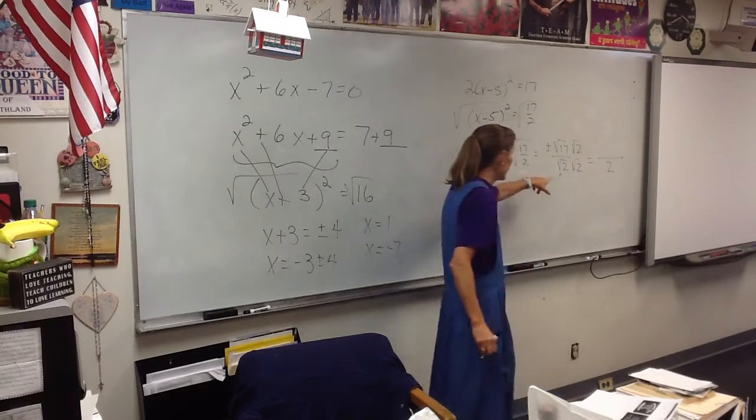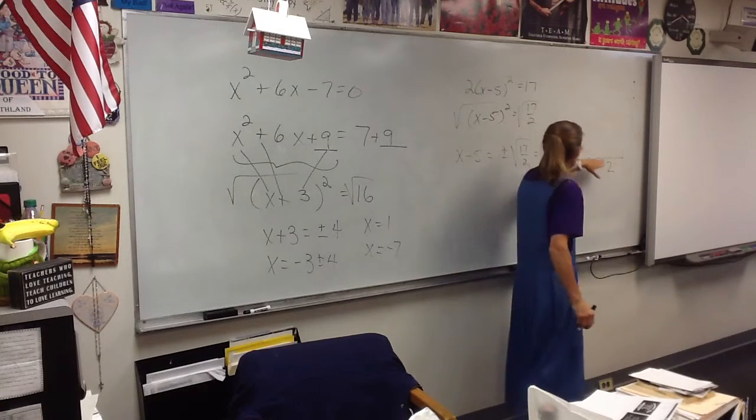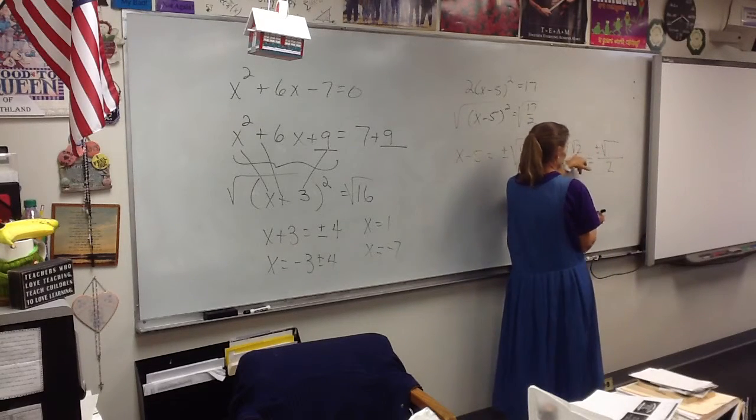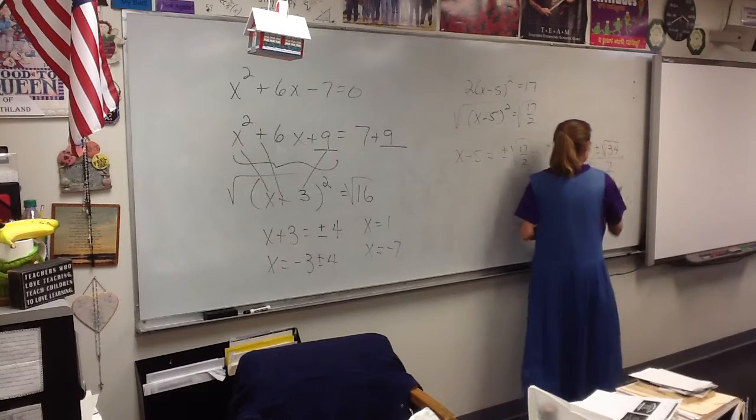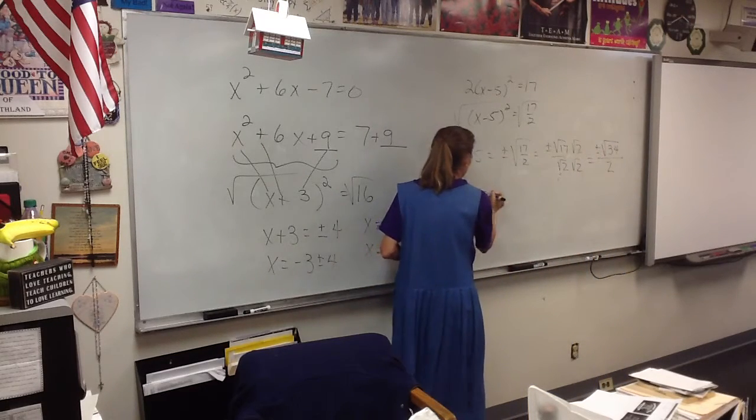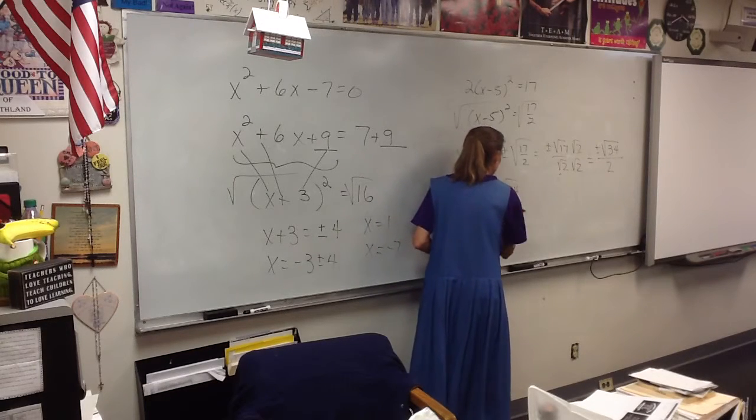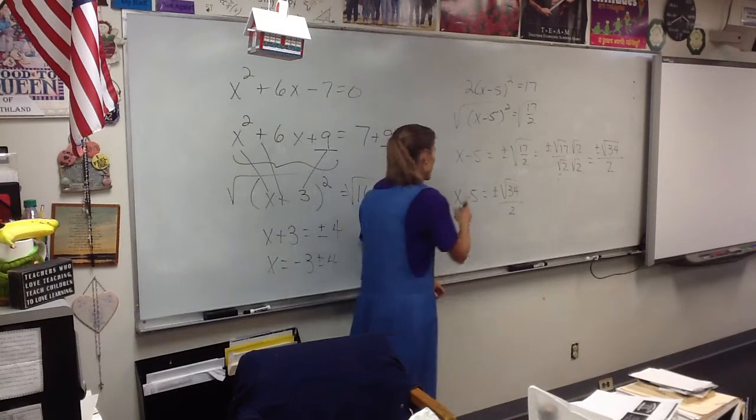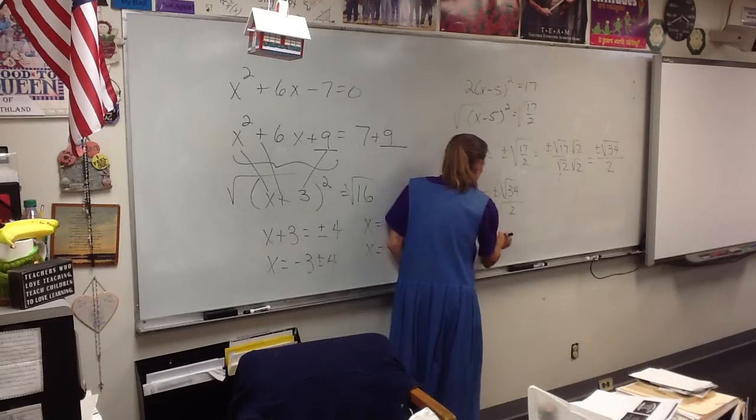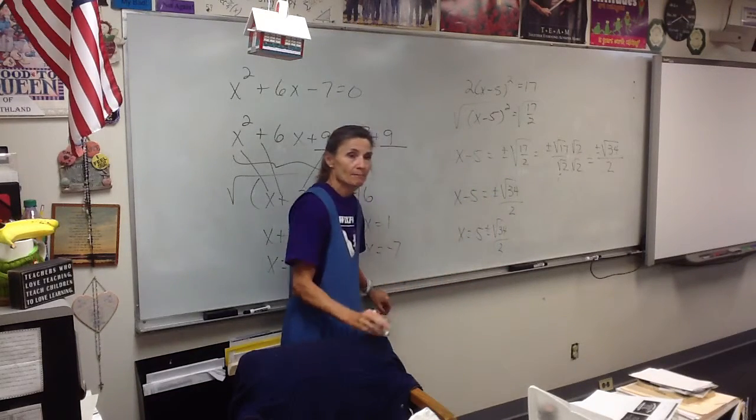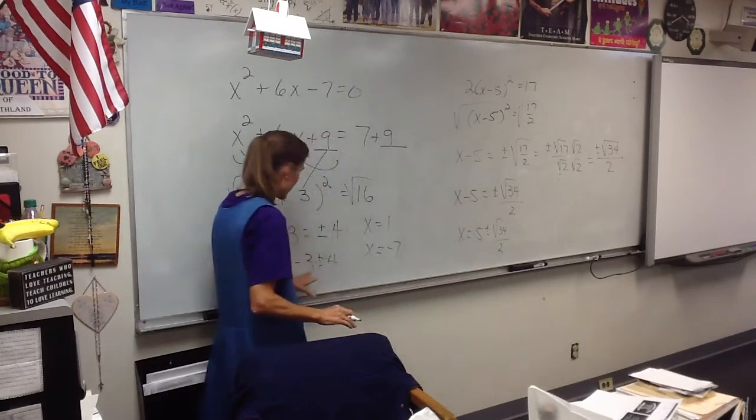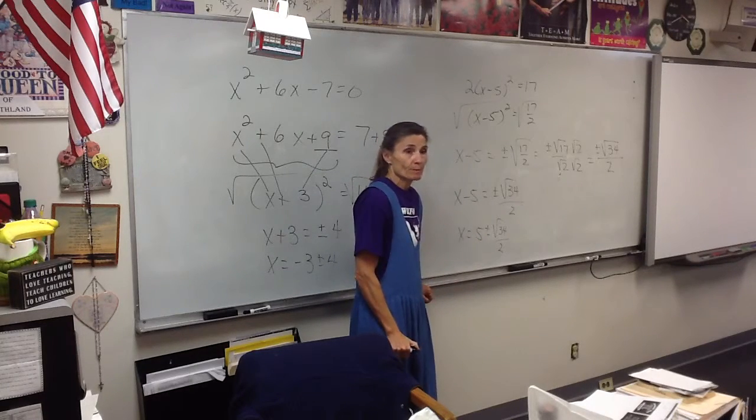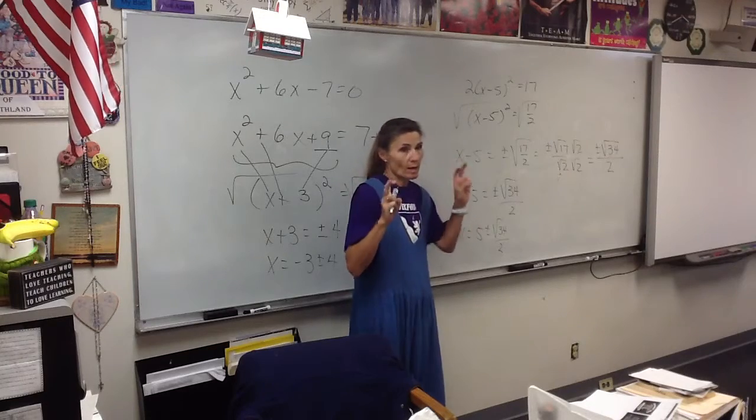Remember, the issue was we had a radical. Now we don't anymore. What do we have on the top though? Plus or minus the square root of 34. So we have x minus 5 equals plus or minus the square root of 34 over 2. Then we just add 5, Ryan, and we're done. So it's 5 plus or minus the square root of 34 over 2. And you can just leave it like that. Those don't add. So that's one option. That would be like the real way of doing the problem.